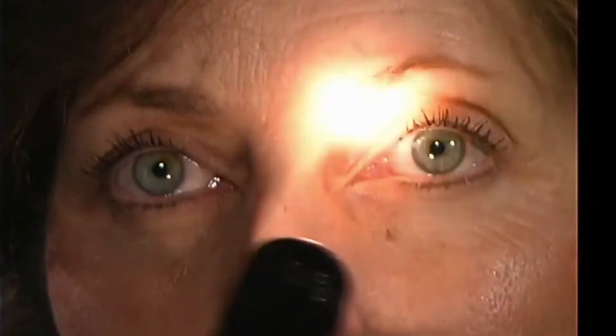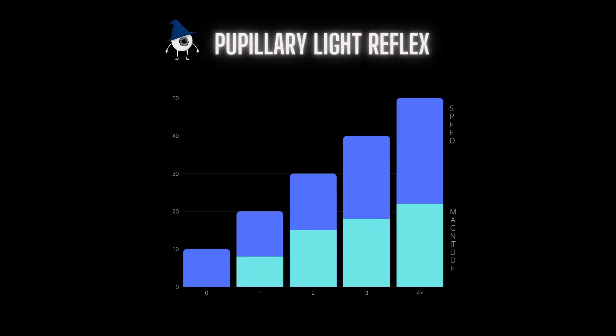Pupillary light reflexes are measured based on a 0 to 4 plus gradient that considers the magnitude and speed of the light response. A normal, healthy adult patient is expected to have a 4 plus response, which indicates a brisk, large response.